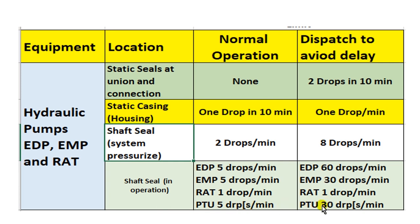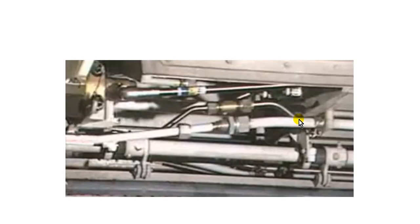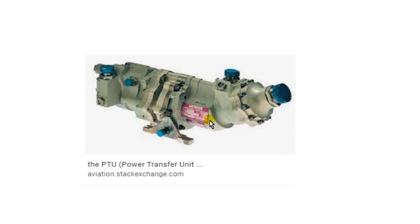The RAT: one drop per minute. Power transfer unit: two drops per minute in operation, ten drops per minute during dispatch. This is the engine driven pump casing, this is the electric motor pump casing, these are the tube connections and unions, and this is the power transfer unit — the connection between the systems.